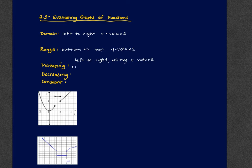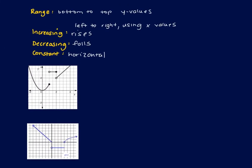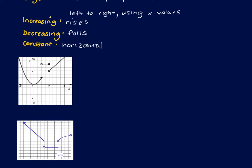Increasing is when the graph rises as it moves left to right; decreasing falls as you move left to right; constant is horizontal. On graph A, the domain: it starts with an arrow on the left and continues through breaks in the graph — at each break there's one solid and one open dot, so there's no actual stop. The domain goes all values from left to right: negative infinity to positive infinity.